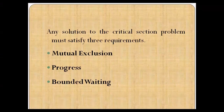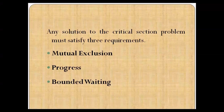Let's revisit all three conditions. Mutual exclusion places a restriction that if one process is executing in the critical section, no other process will be allowed to enter it. Progress means if no process is executing in the critical section, then among all processes waiting in the entry section, one will be given permission to enter so it can access the shared data. Bounded waiting means all processes waiting in the entry section to enter the critical section must have a bound — they must wait until their request is granted.